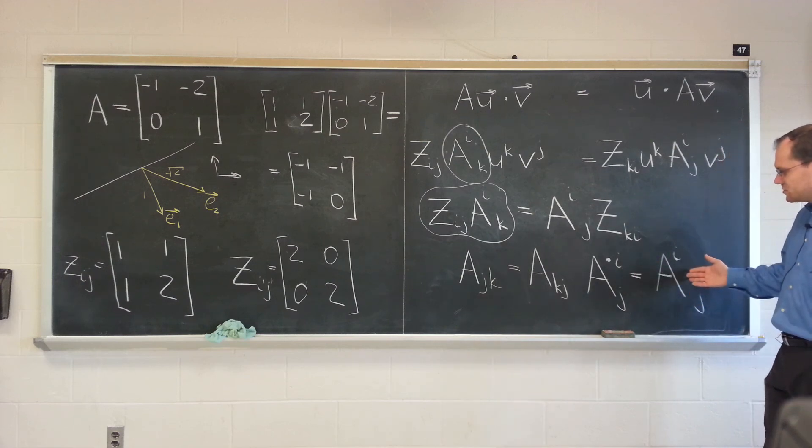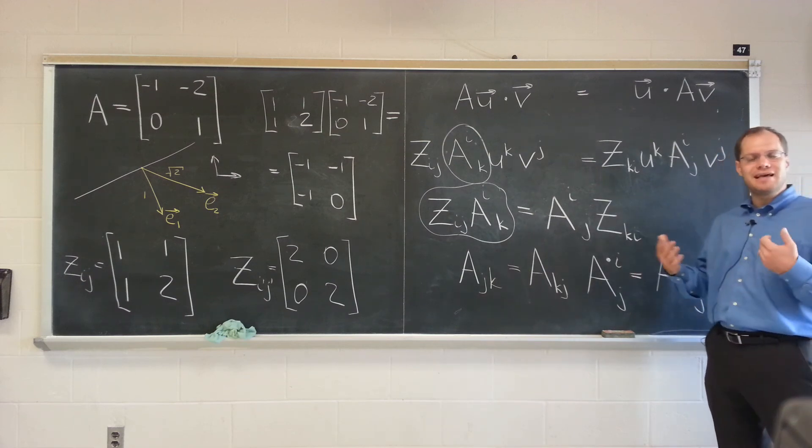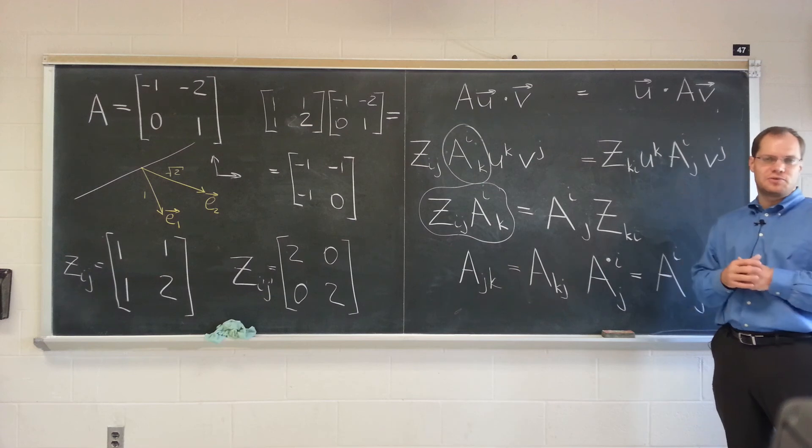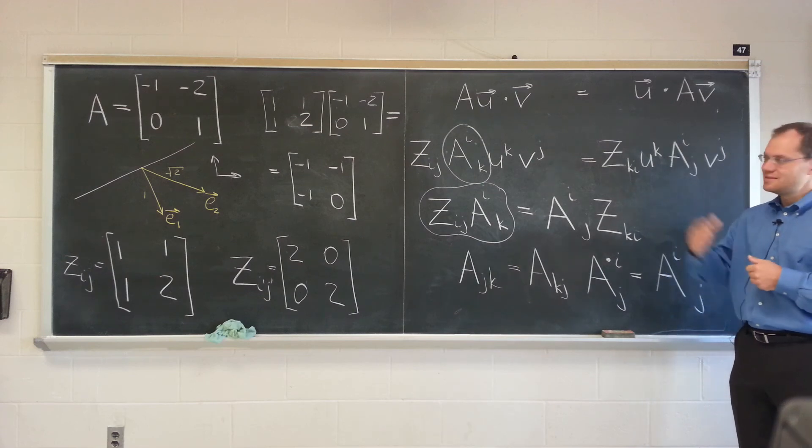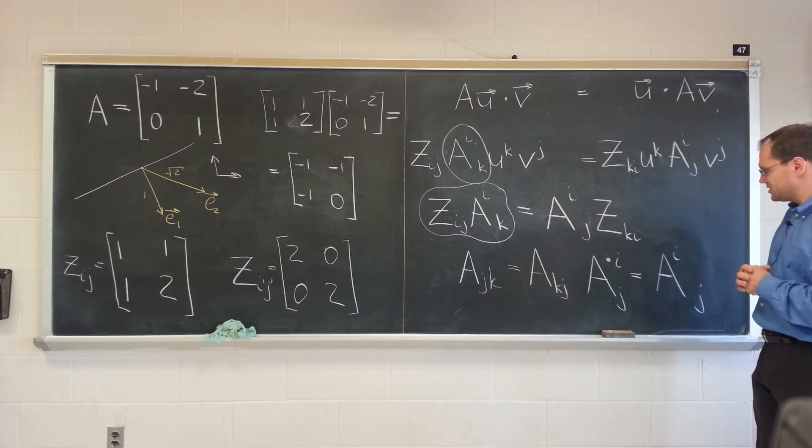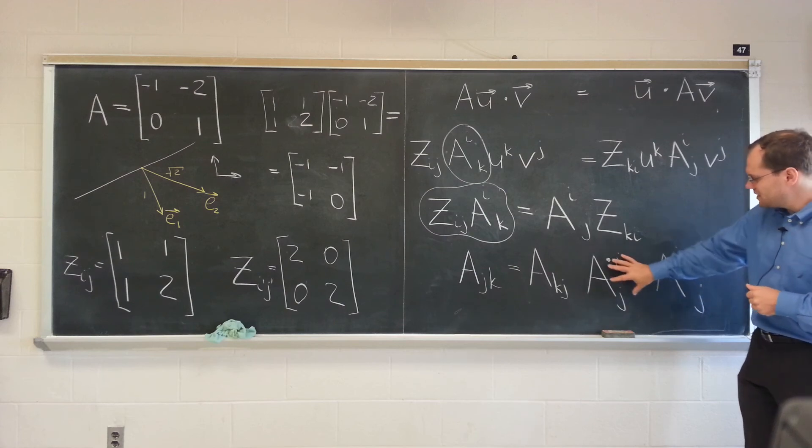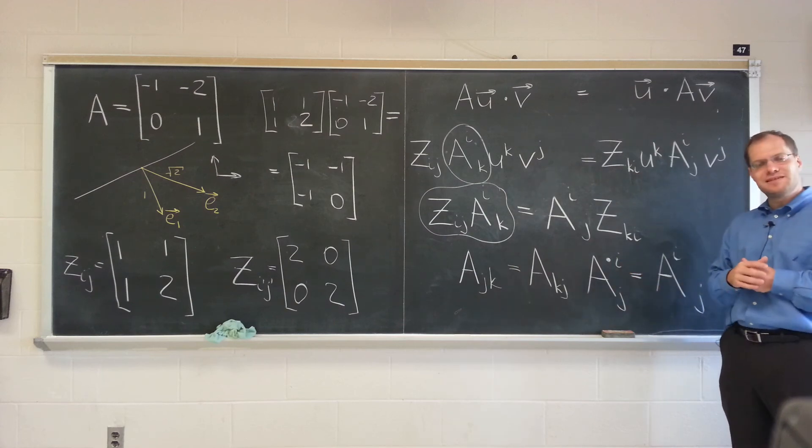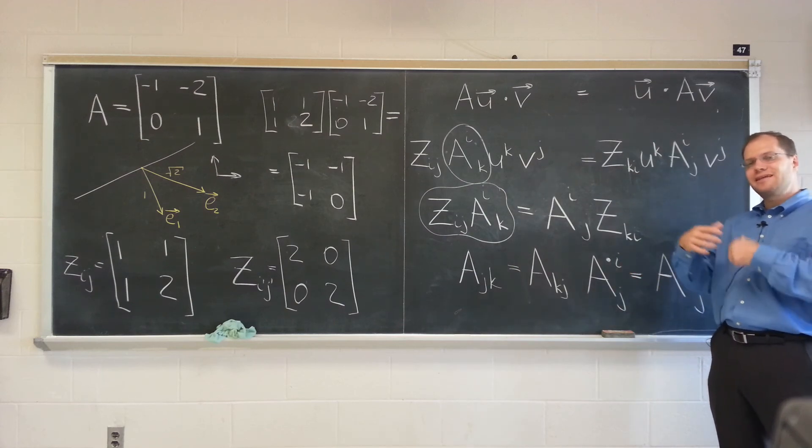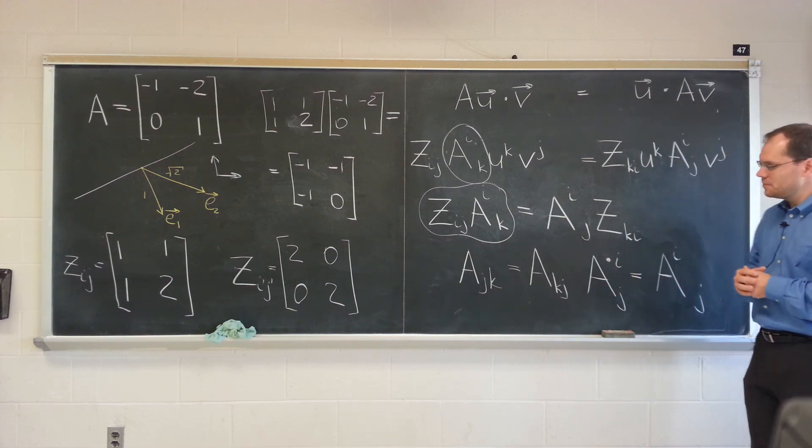When you see something like this in tensor notation, it does not mean entry-by-entry equality of the transposes like it does in matrix notation. There is so much information in this notation and the placement of index, that when you translate it to actual numbers, that requires a little bit of careful thought.